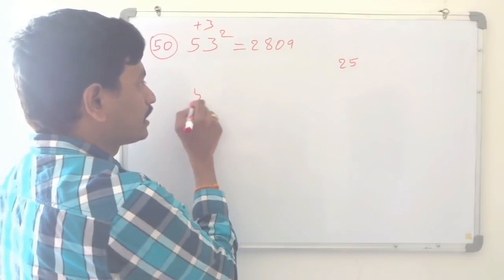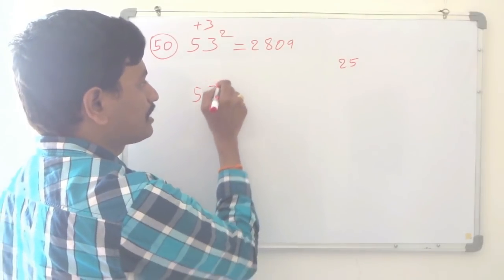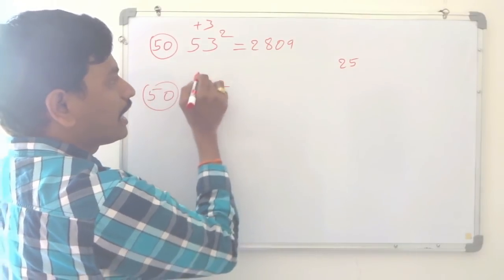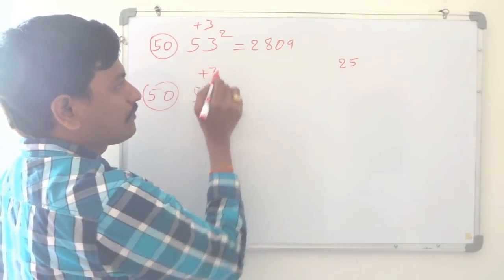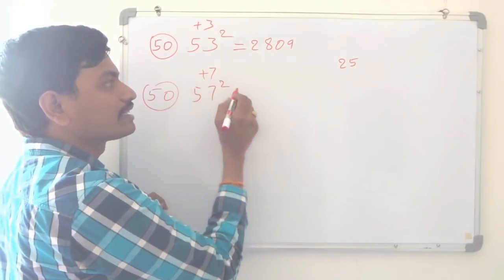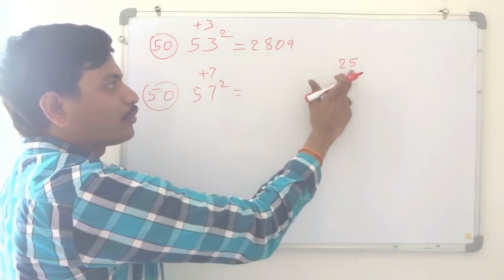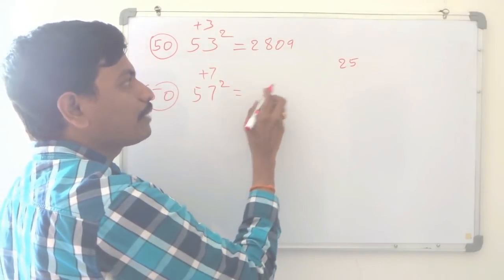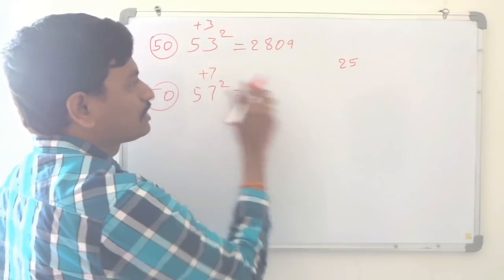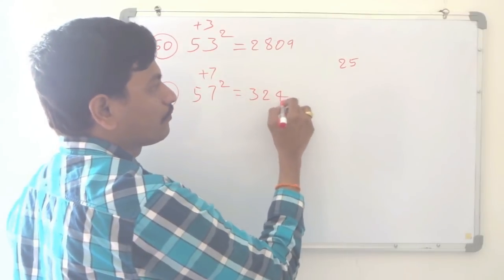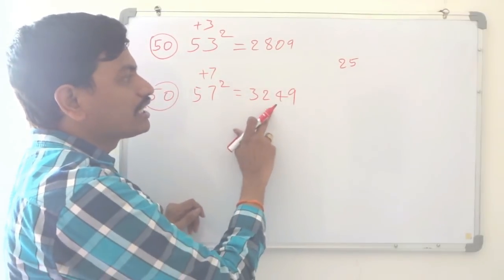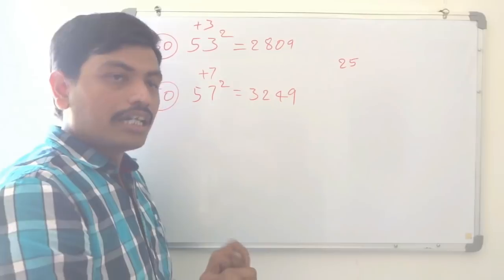In the same way, if we take 57 squared, which is nearer to 50, 57 is how much bigger than 50? Plus 7. Always add to 25: 25 plus 7 is 32. And 7 squared is 49. So 57 squared is 3249.